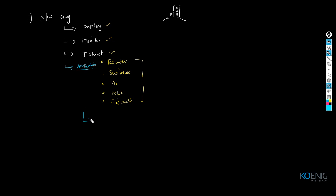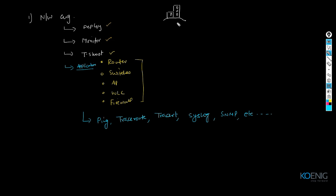For troubleshooting these devices, you have to depend on some applications. Lots of people are using ping, traceroute, syslog, SNMP, and so on. You are a network engineer; your office is here. In your office you are going to deploy — let's say you purchase a new access point. It is your responsibility to deploy this access point in your company, then monitor it, and then troubleshoot it.